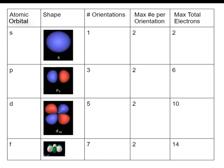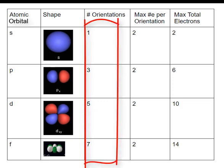The third column includes the number of orientations of each shape. The S atomic orbital is spherical, so there's one orientation. Because of the shape of the P atomic orbital, there are three orientations. With the D, it gets more complex and there are five. And with the F, it's even more complex, and there are actually seven orientations.